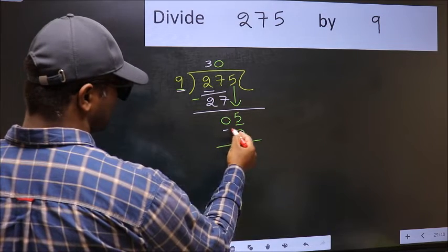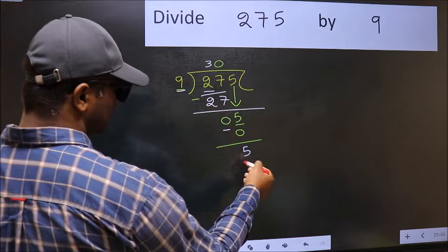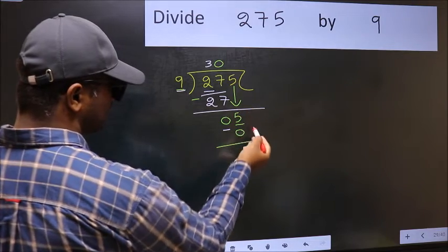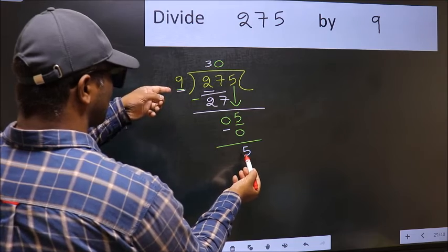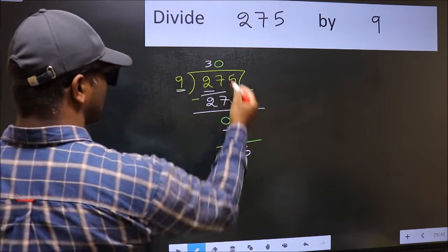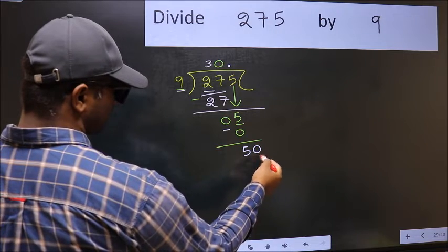Now you should subtract. 5 minus 0, 5. Over here, we did not bring any number down. And 5 is smaller than 9. So now you can put dot and take 0. So 50.